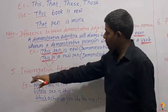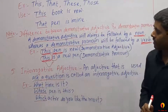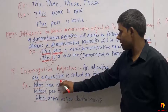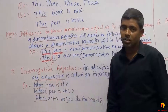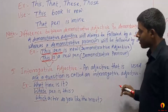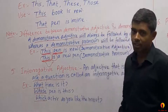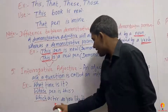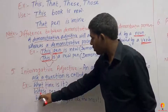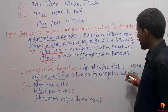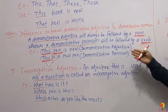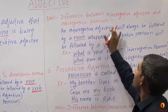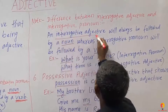The next type is Interrogative Adjective. What is an Interrogative Adjective? An adjective that is used to ask a question is called an Interrogative Adjective. For example: 'What time is it?' and 'Which actor do you like the most?'